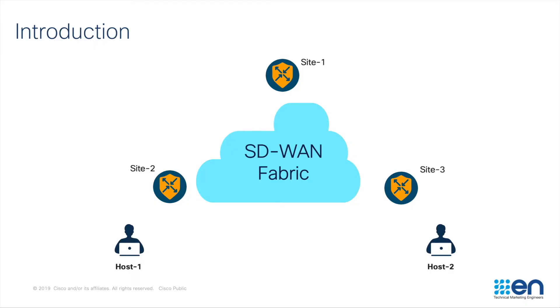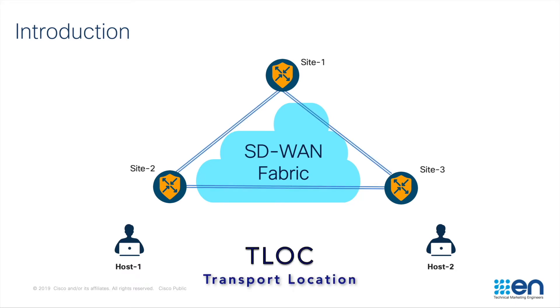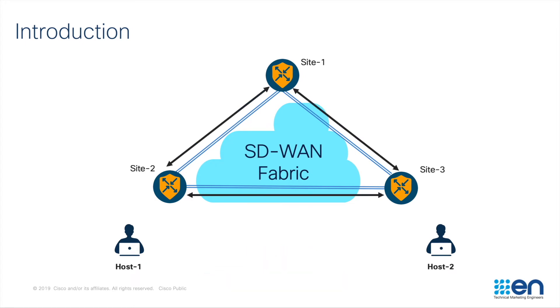The default design of SD-WAN is to form a full mesh tunnel between the edge routers with all the available T-locks. The traffic flows directly between the sites.